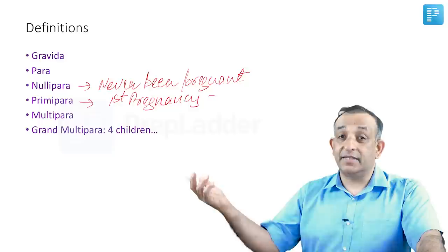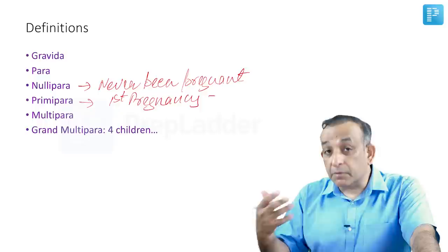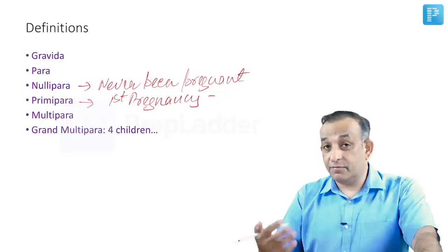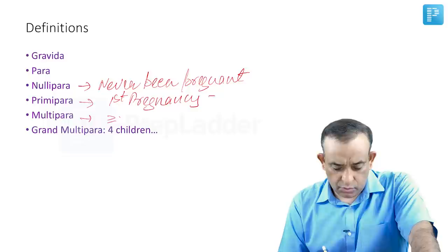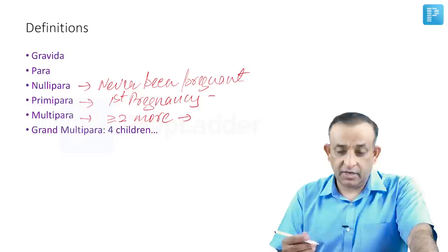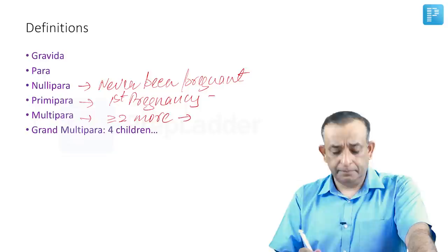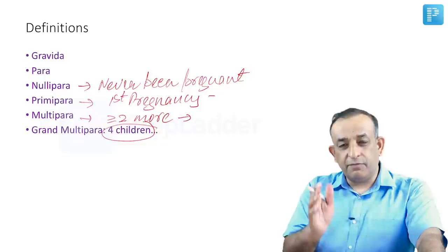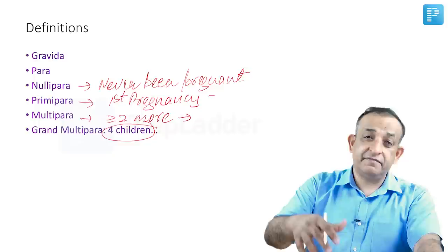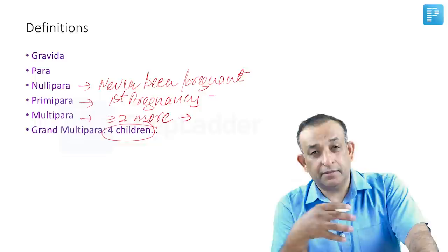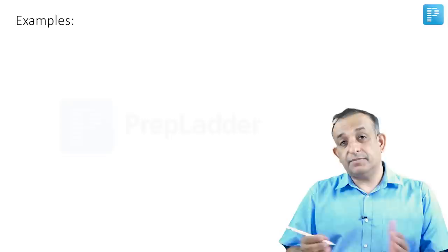Multipara is a woman who has been pregnant more than once — two or more pregnancies delivered. Grand multipara is a woman who has delivered four children; beyond four deliveries is grand multipara. If she is pregnant again at the fifth, sixth, or seventh time, she is still referred to as grand multipara.